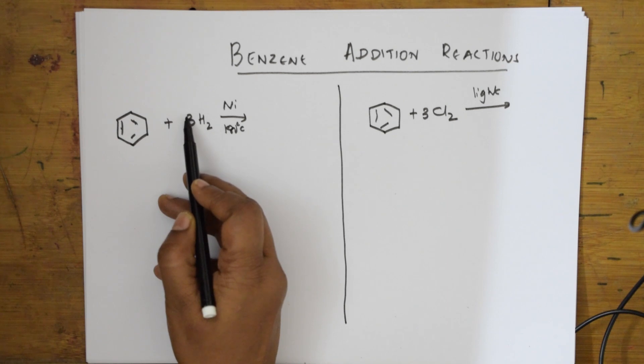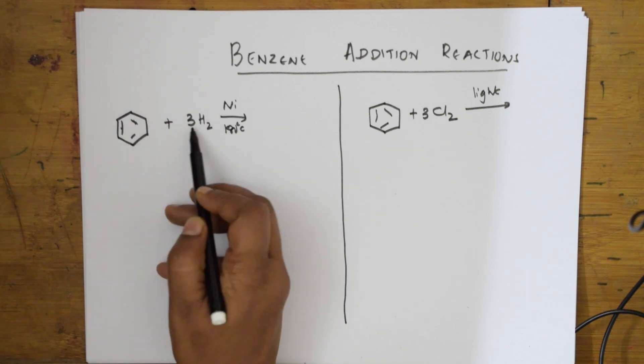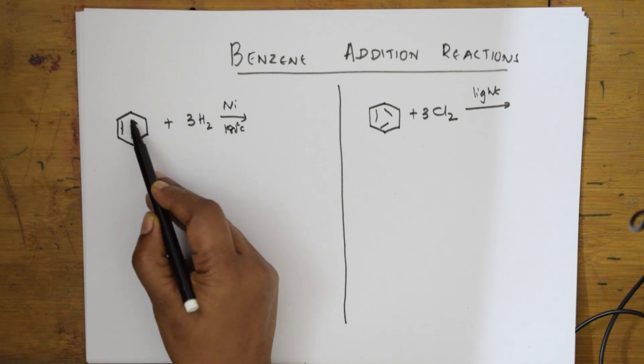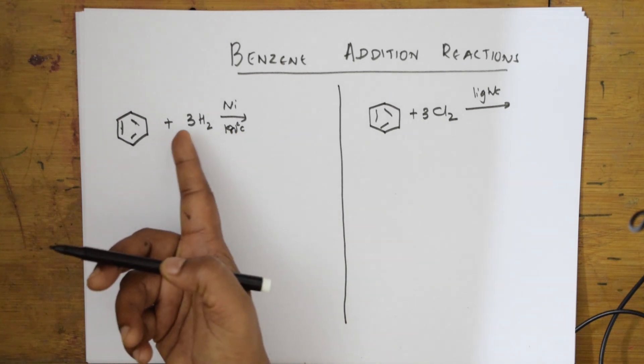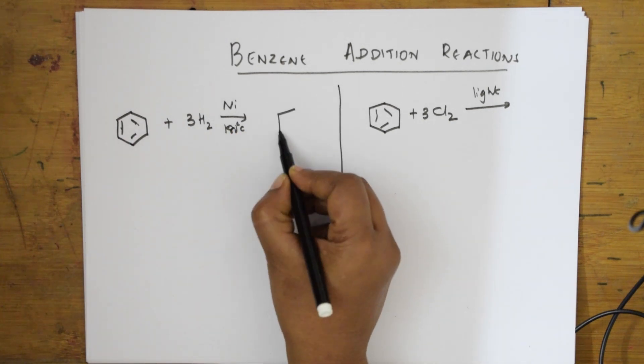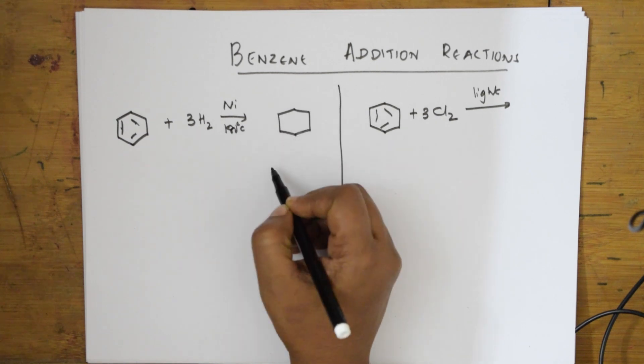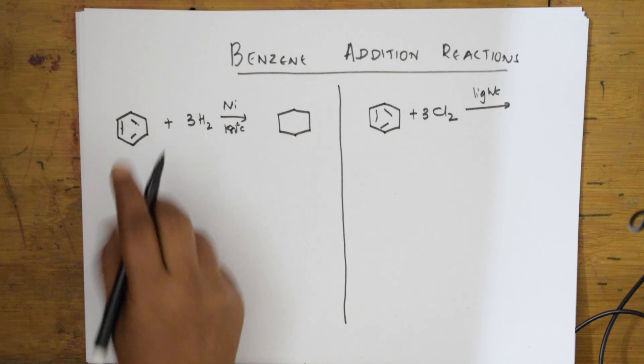When three hydrogens are added, this bond is broken. This bond and these hydrogens, three to six hydrogens, are broken. All six are broken. The three pi bonds are broken and these hydrogens add to this.